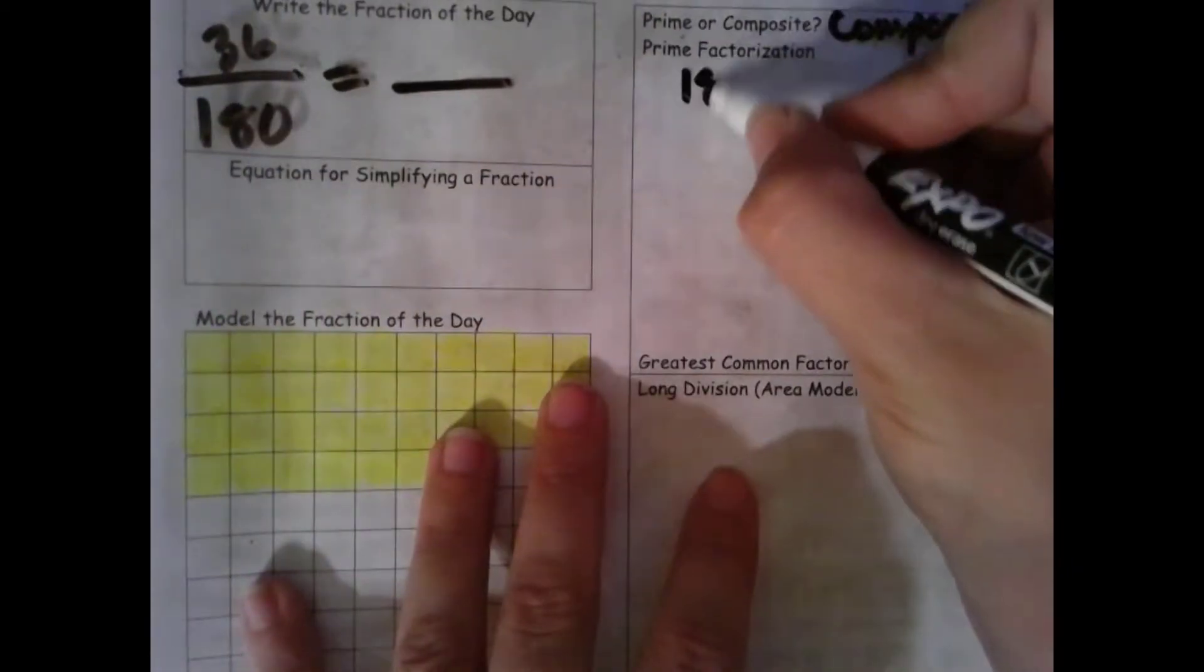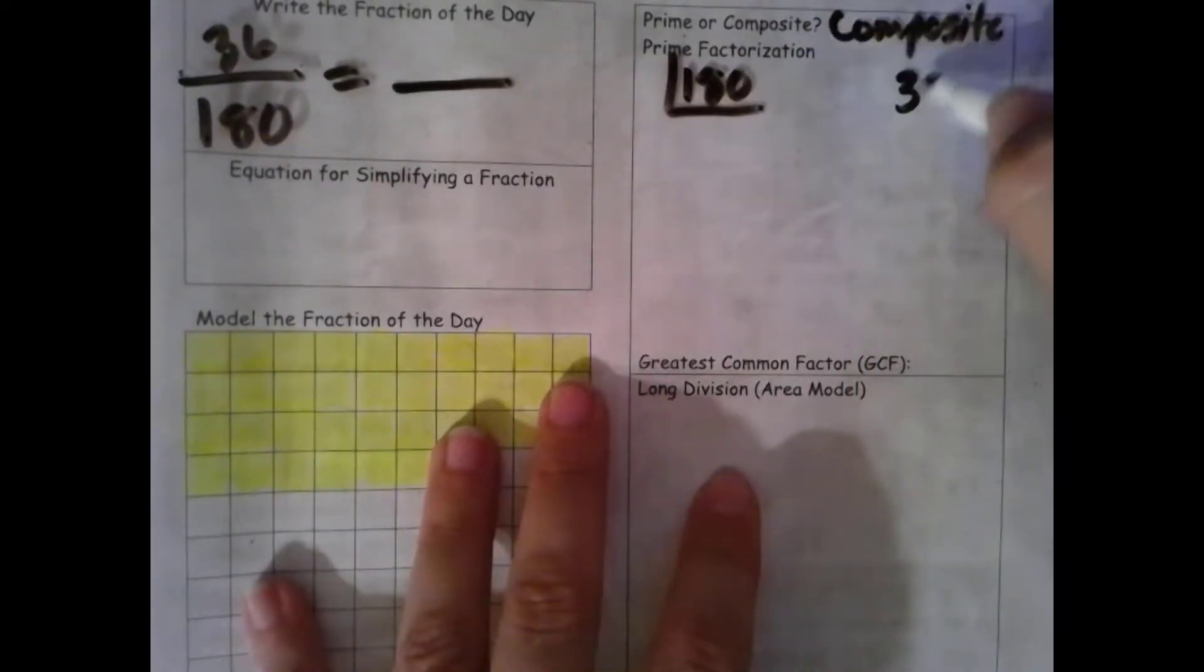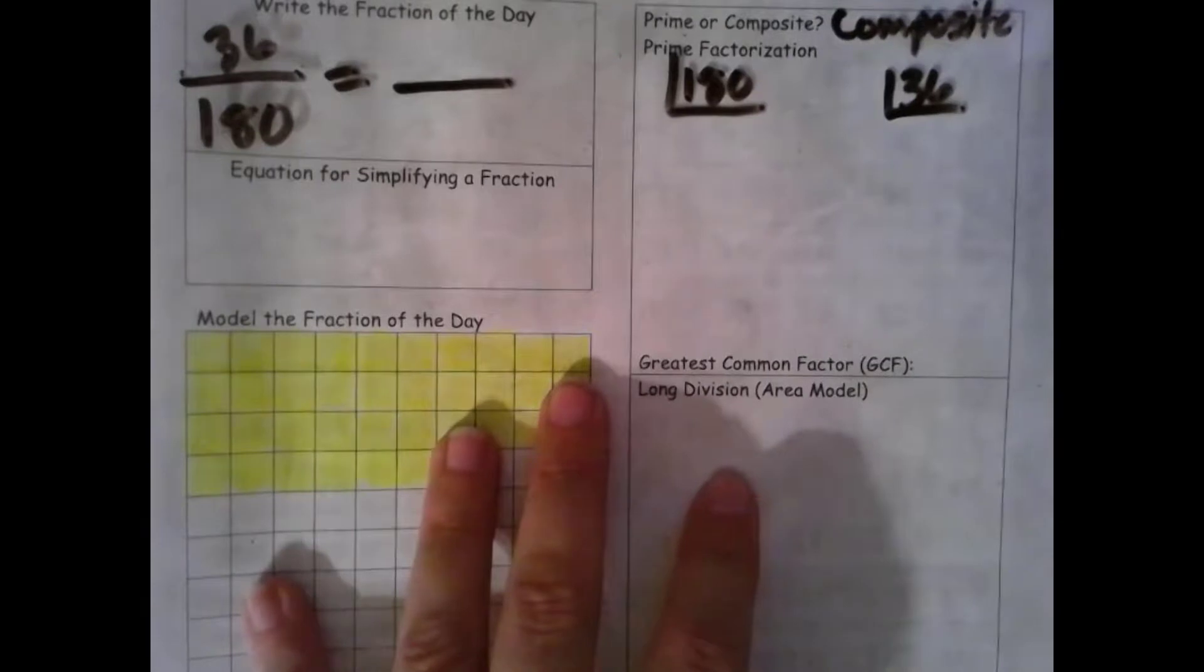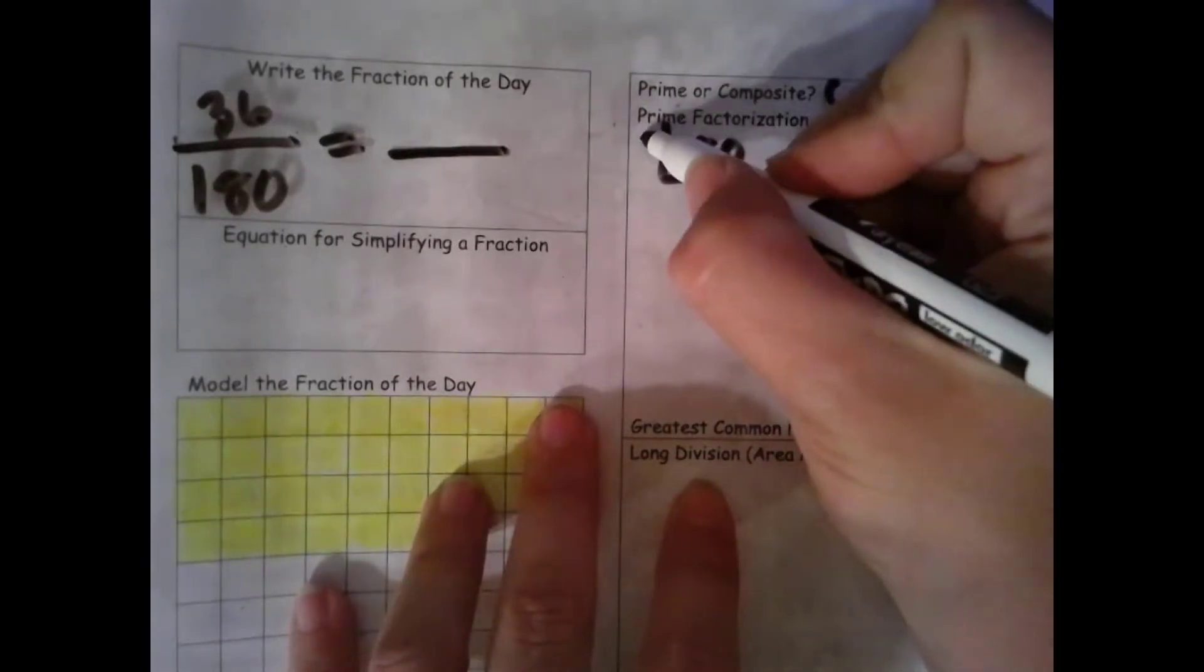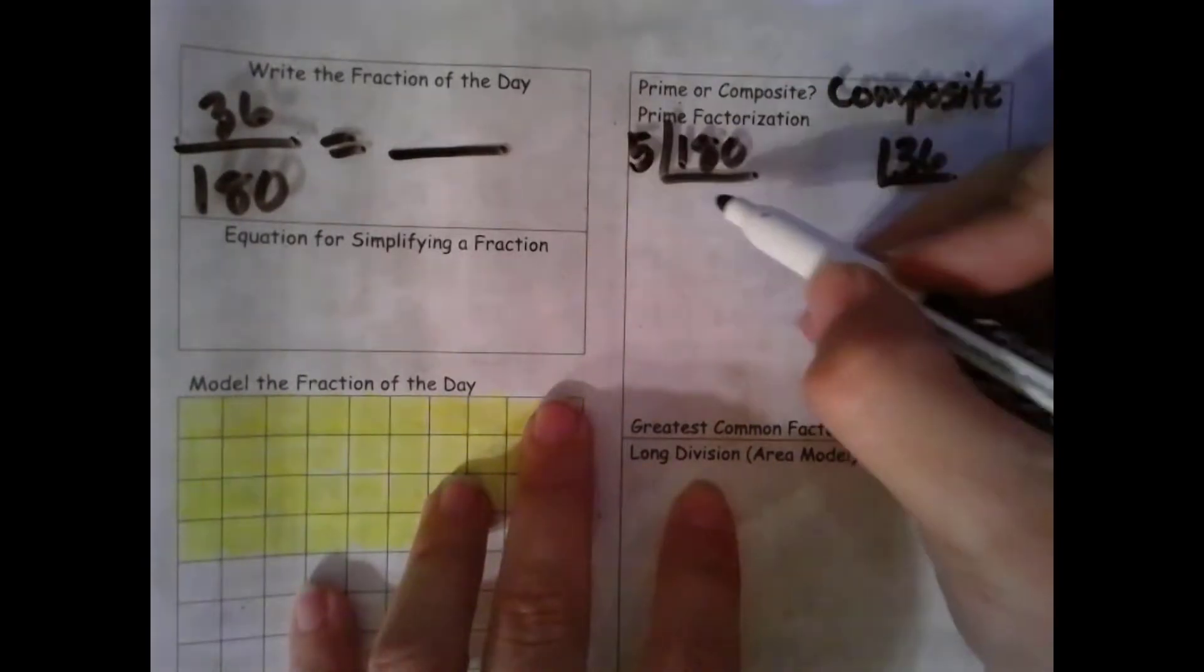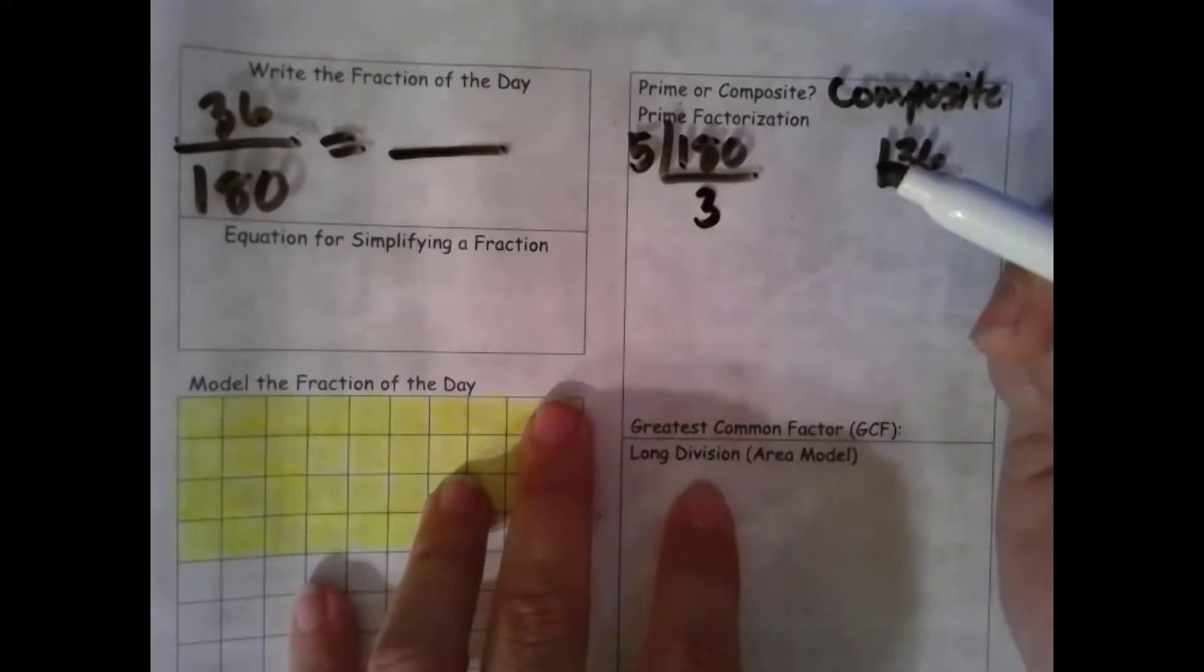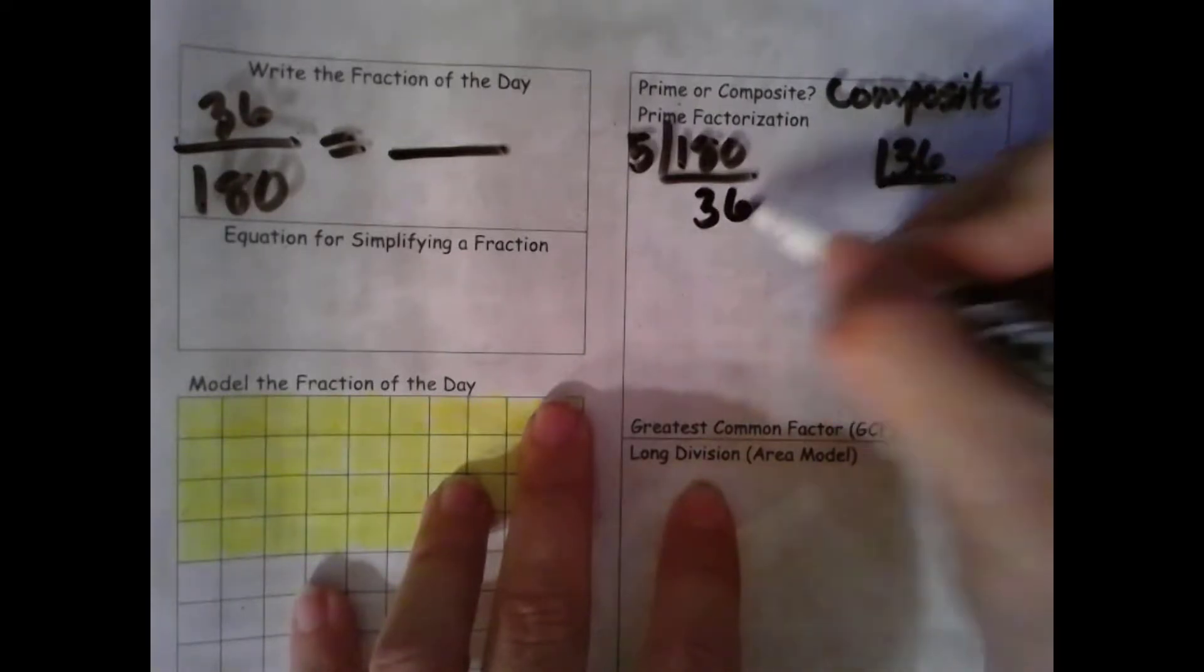So that means we need to do the prime factorization for both our denominator and our numerator. So here, let's see, it ends in a zero, so I know 5 is a factor. I can get 3 groups of 15 out of 18. That leaves me with 3 tens, which is 30. And I can get 6 groups of 5 out of 30.